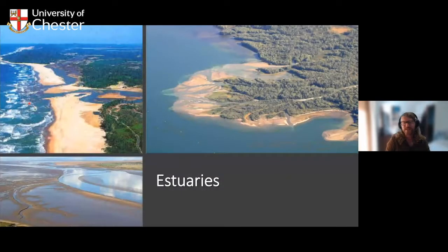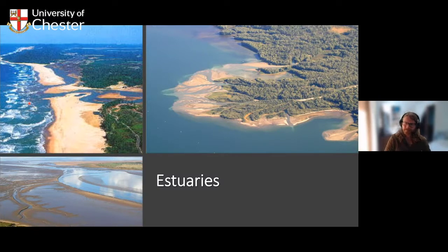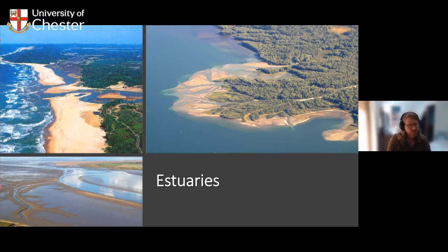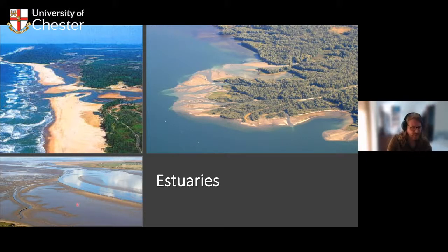Then there are estuaries, where terrestrial, marine and fluvial processes all interact, increasing the complexity even further. We're still on the boundary where land meets sea, but now we have river outflow and need to consider the balance of sediment and water flowing out of the river against the strength of waves and tides. This can lead to a whole range of different morphologies - from deltas to large expanses of mud and sand flats at low tide - all depending on the balance of processes at those locations.